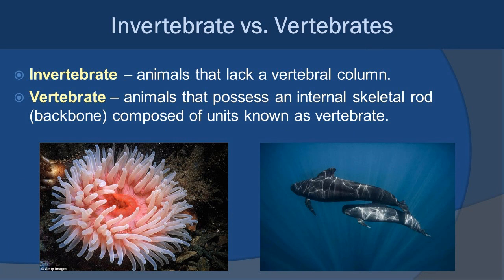Now let's differentiate between invertebrates and vertebrates. If you reach around to your back and feel that bony ridge running up and down — that's your vertebral column, your backbone. Vertebrates have that backbone, whether it's a fish or pilot whales like you see in the picture. If you do not have that vertebral column, you are an invertebrate — an animal that lacks a backbone. A sea anemone is an example, and pretty much everything in this note set and the 11.3 note set will be invertebrates: no backbone, no vertebral column.